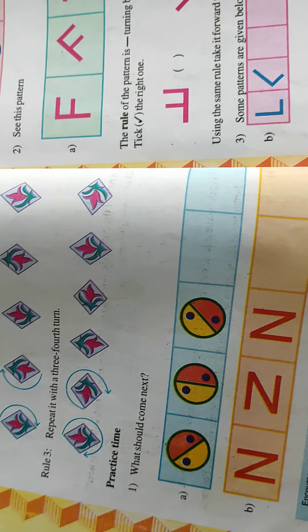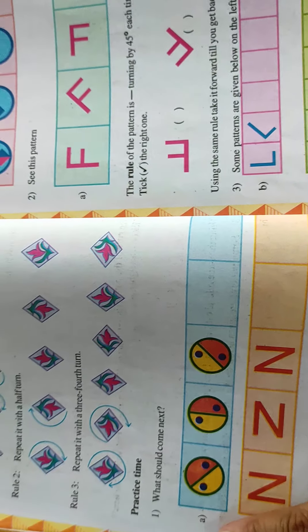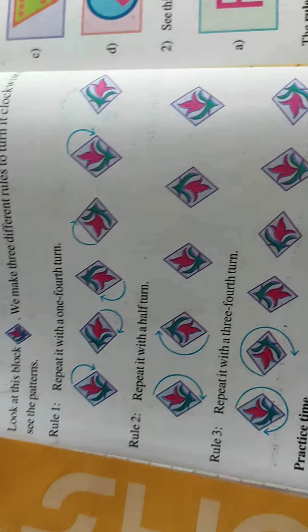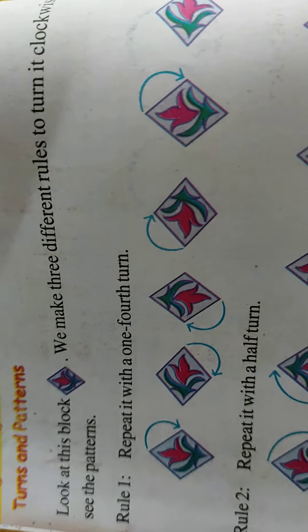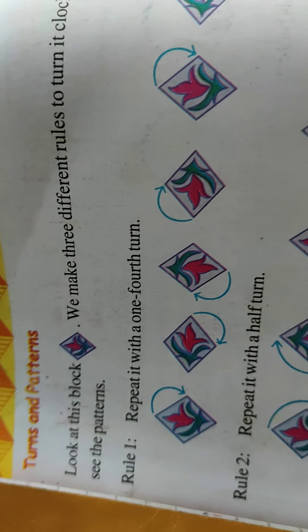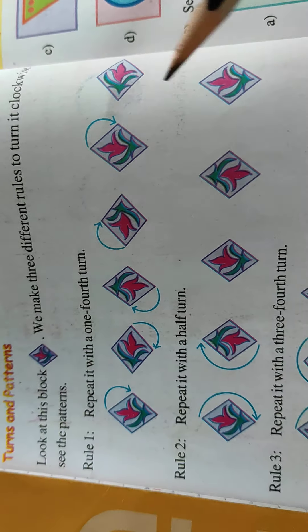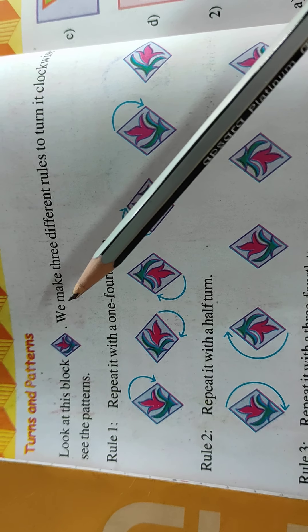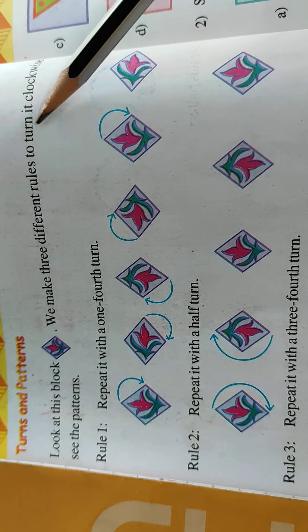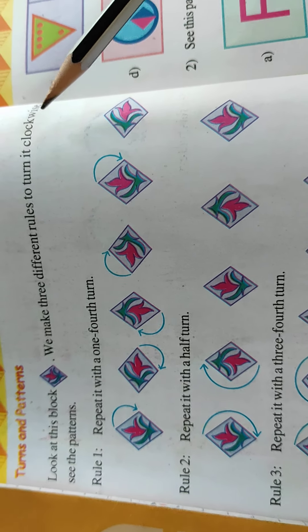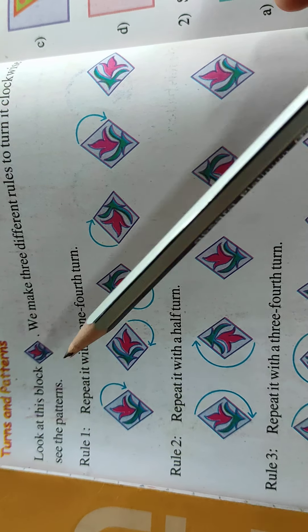Now next see here. Turns and patterns. Look at this block, already given on the previous page. We make three different rules to turn it clockwise.